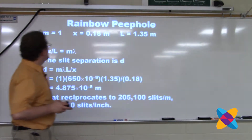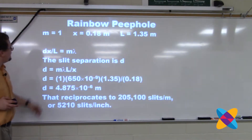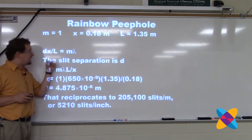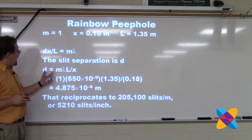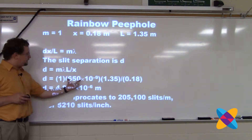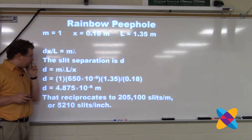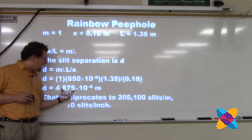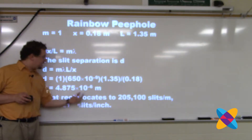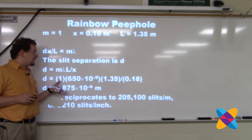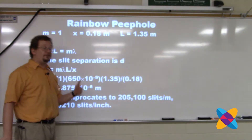I'm going to just plug in: d·sinθ becomes X over L equals m·lambda. I isolate d, plug in my numbers using the actual wavelength of red light, and I get a slit separation of 4.875 × 10⁻⁶.